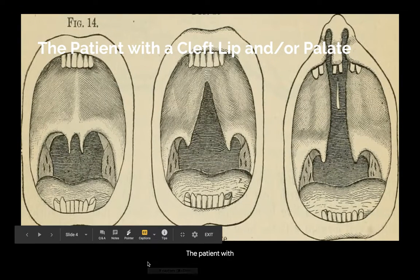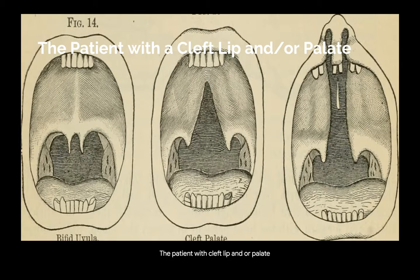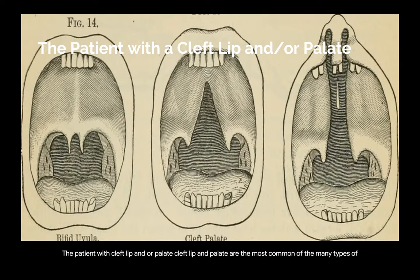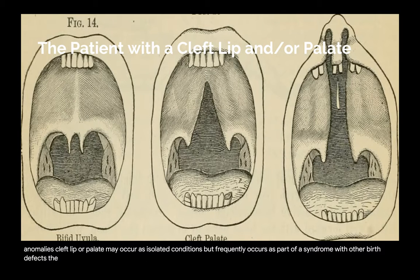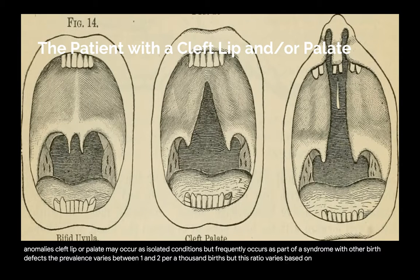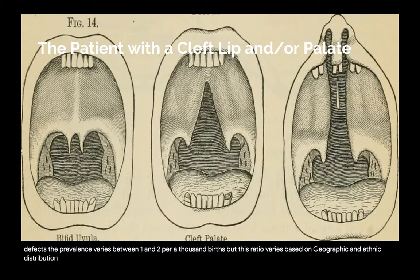The patient with cleft lip and/or palate. Cleft lip and palate are the most common of the many types of congenital craniofacial anomalies. Cleft lip or palate may occur as isolated conditions but frequently occurs as part of a syndrome with other birth defects. The prevalence varies between one and two per thousand births, but this ratio varies based on geographic and ethnic distribution.